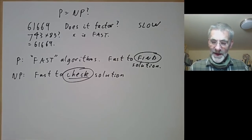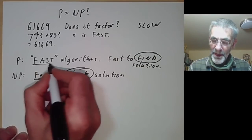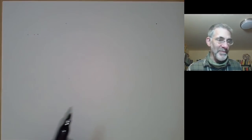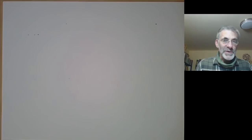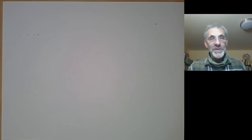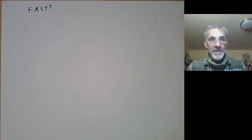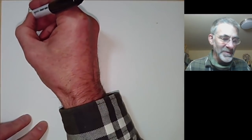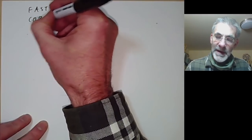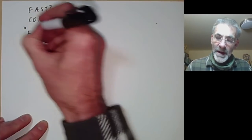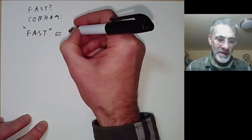The problem is I've used this word 'fast', and the question is what does fast mean for algorithms? We want a general definition that doesn't depend on what sort of computer you're using — it shouldn't depend on whether you're using pencil and paper or a computer that can do a billion operations a second. There's no very precise definition of fast, but there's a reasonable substitute due to Cobham, who came up with this in the mid-60s, which says that fast for algorithms is roughly equivalent to polynomial time.